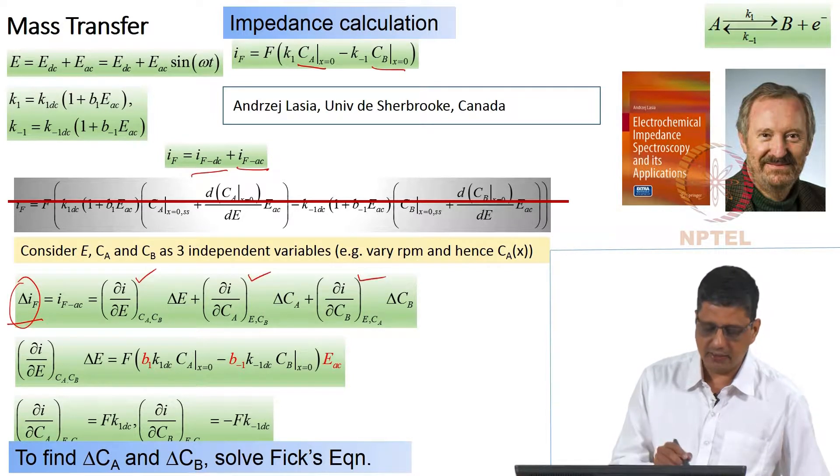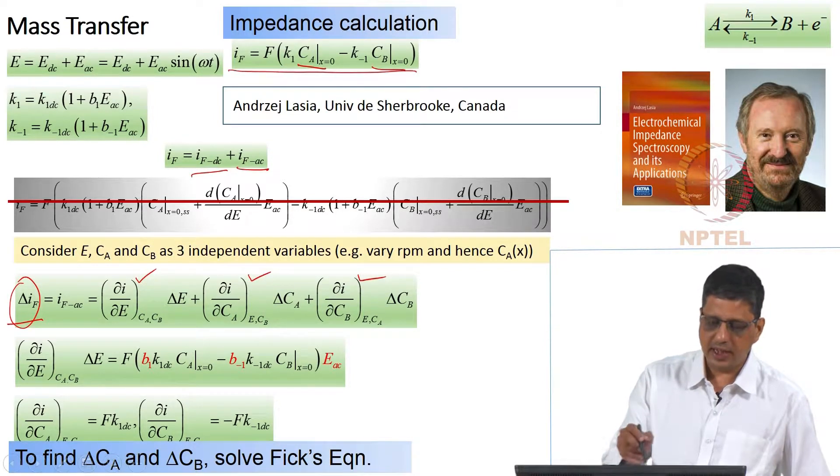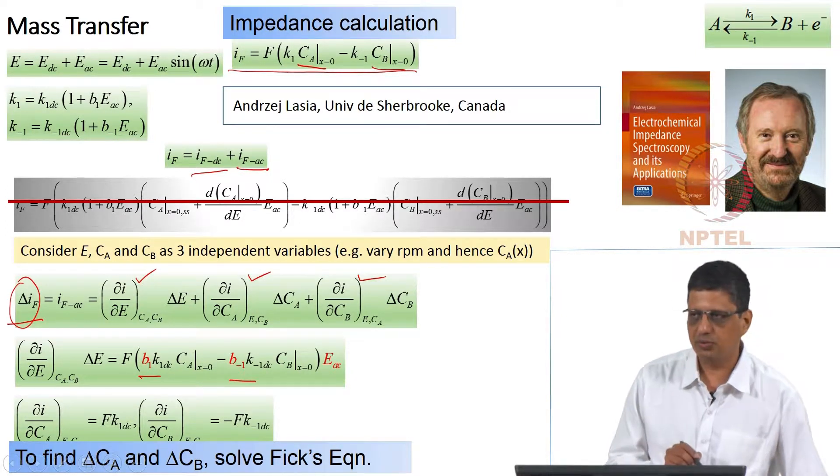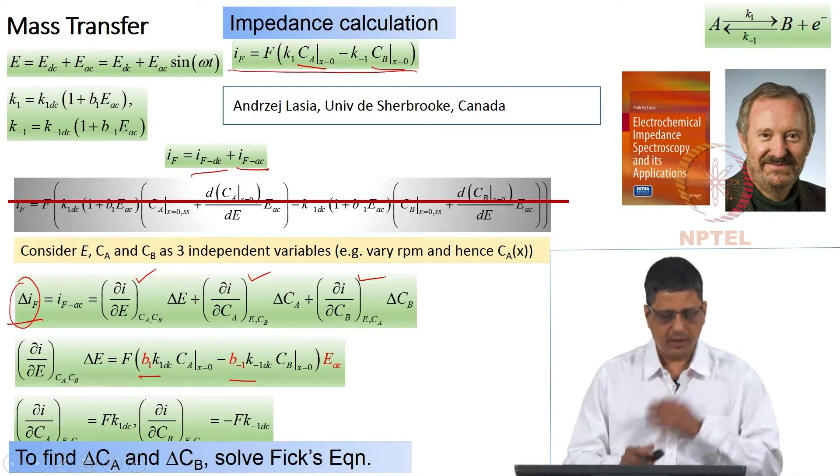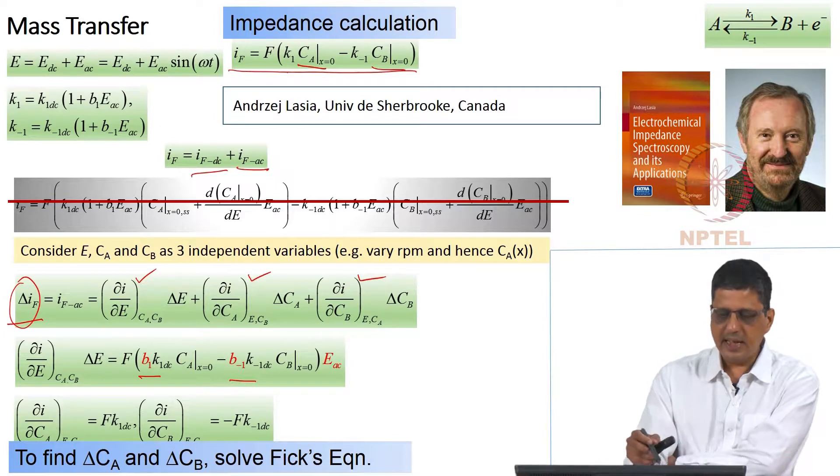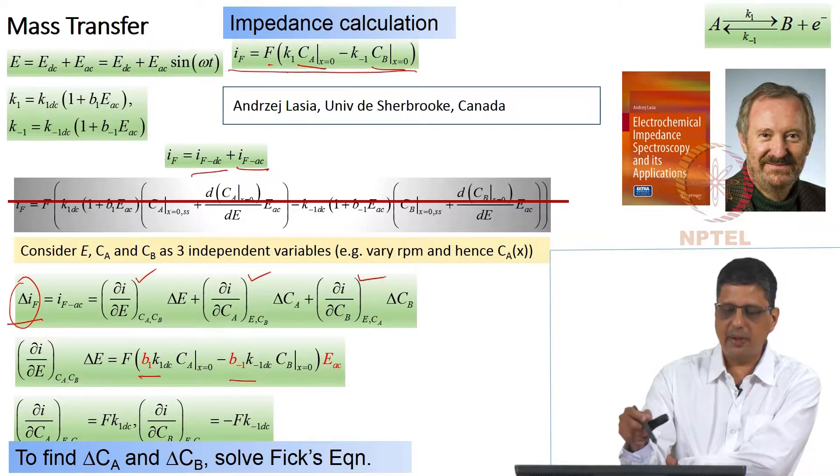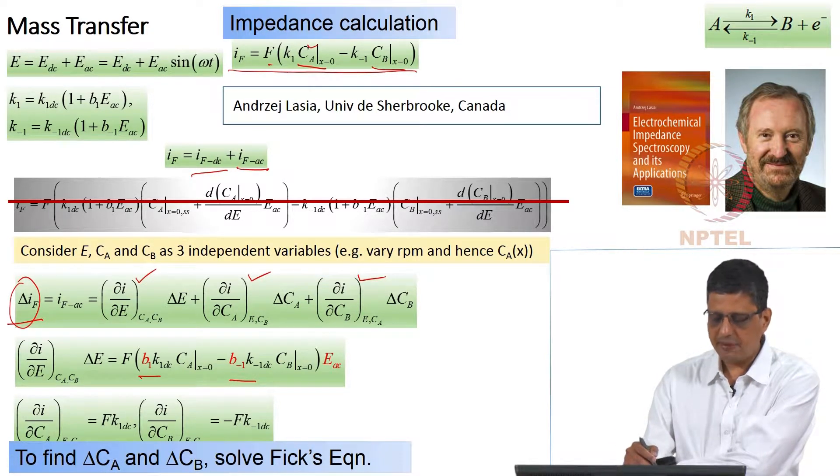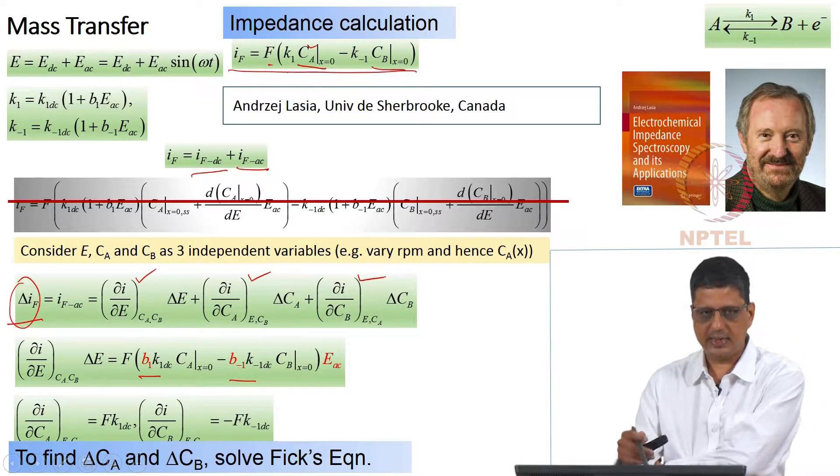These three terms are easy to get. We know the function I, current as a function of k1·C_A, k_minus_1·C_B and k1 and k_minus_1 when you take the derivative, it is going to give you b1 and b_minus_1. So the first part dI/dE is easy to get. dI/dC_A is easy to get. F·k1 is going to remain. C_A when you take the derivative, it becomes unity, the right side goes away. For C_B, you are going to be left with –F·k_minus_1_DC. I think up to this we have seen in the last class.